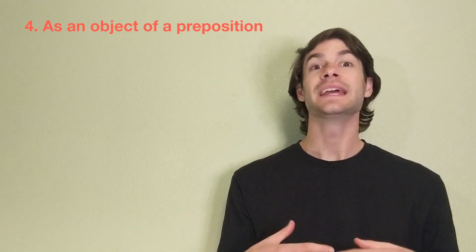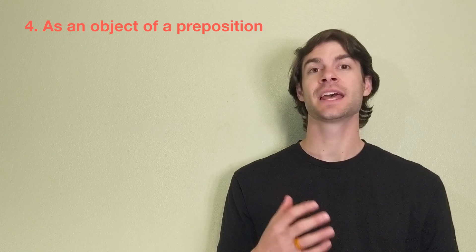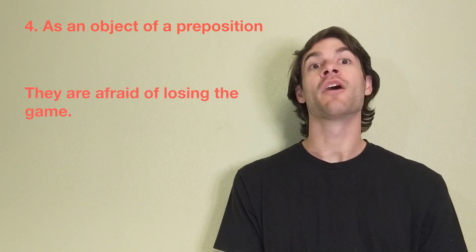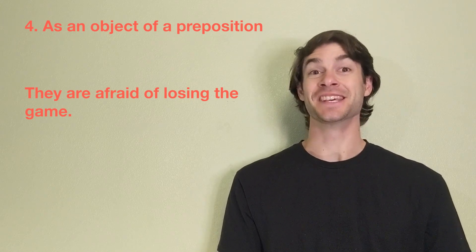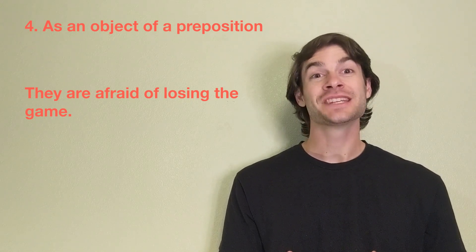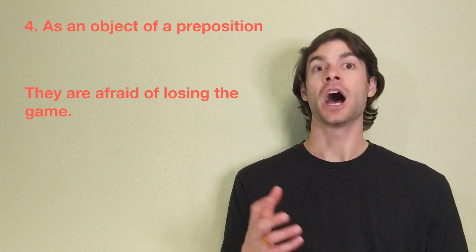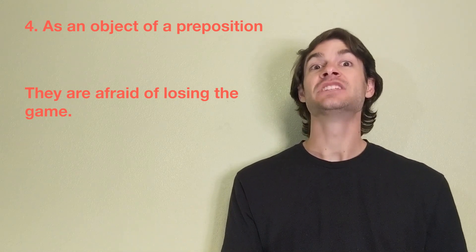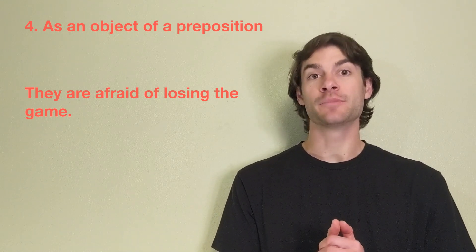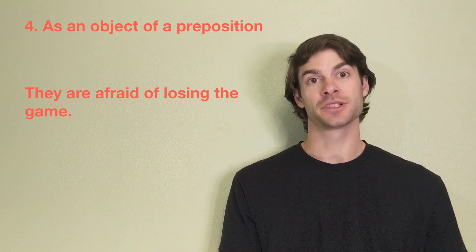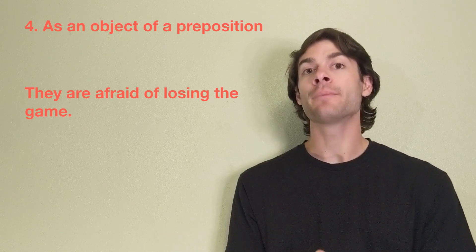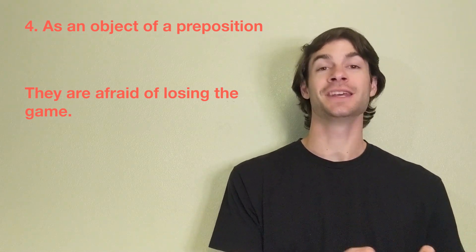This rule is similar in the sentence, because they are afraid of losing the game. In this example, our adjective and preposition combination, afraid of, is followed by our object, losing. In both examples, the gerund is the object of the preposition in the sentence.